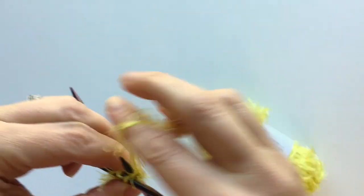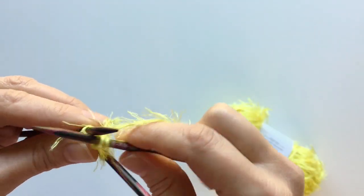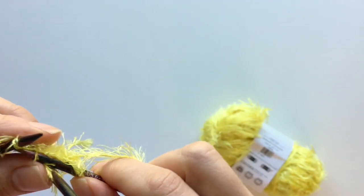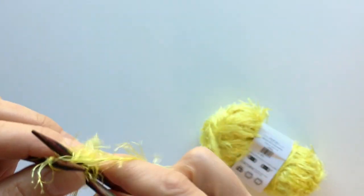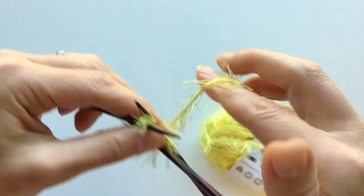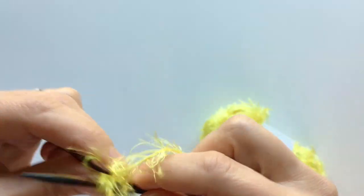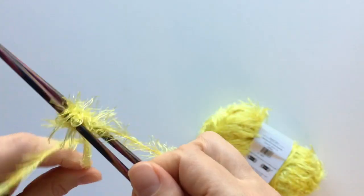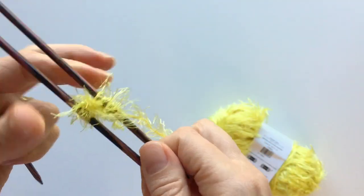I like using a needle color that contrasts with the yarn I'm using. You can see I've got these dark needles here, so the yellow really shows up nicely against them. I can see where I'm putting my needle, where the stitches are, and it makes life easier.